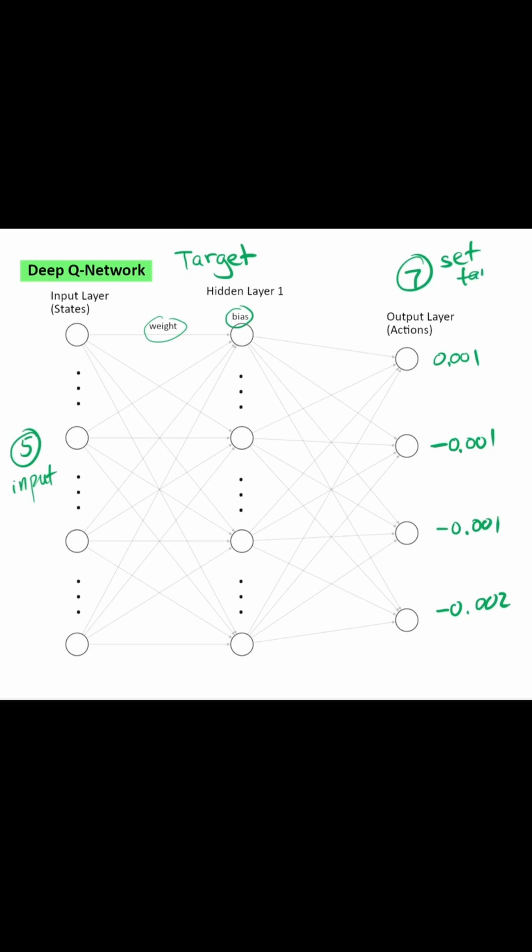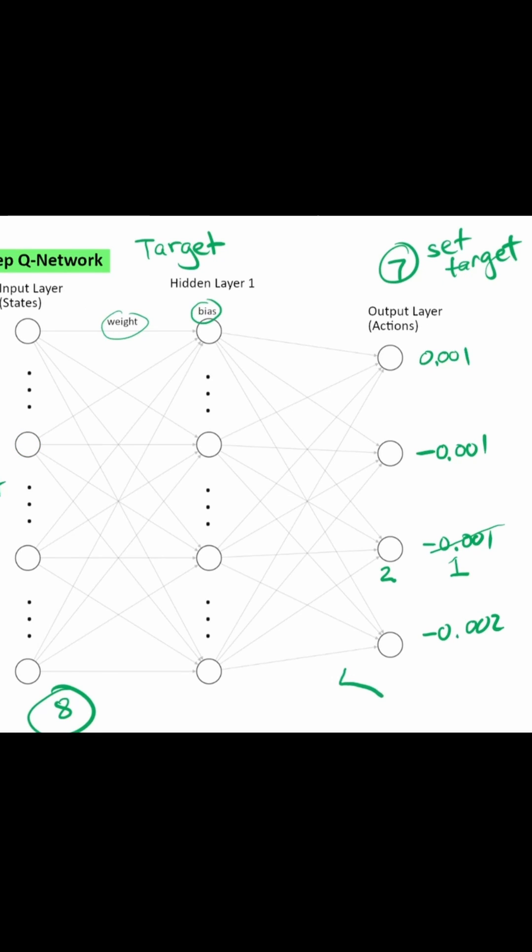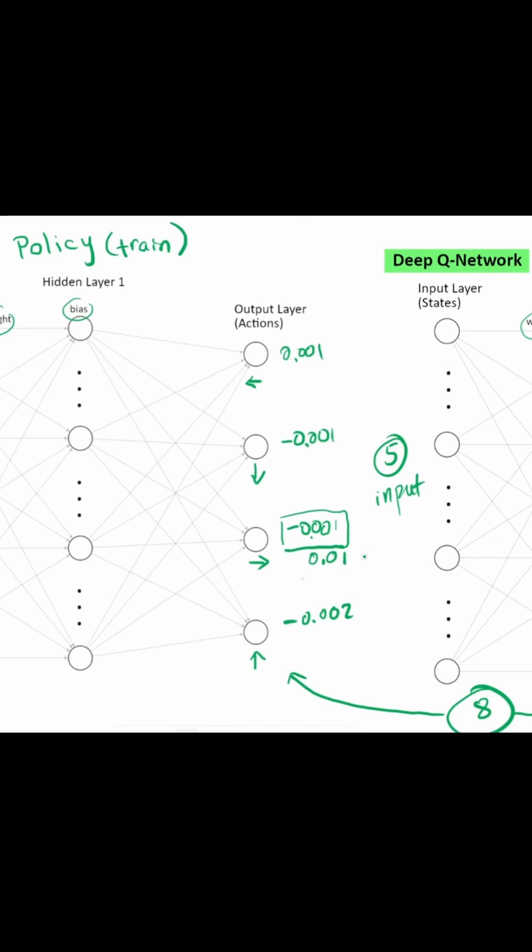Step 7 is to set the target. We take the value that we calculated up on step 6, and we replace the Q value in the output. Step number 8, we take the target Q values. We'll use it to train the policy network.